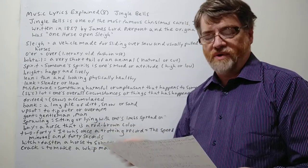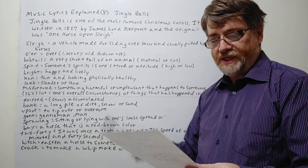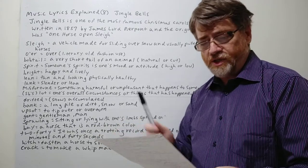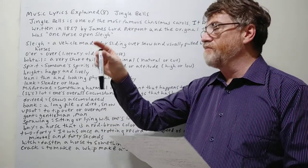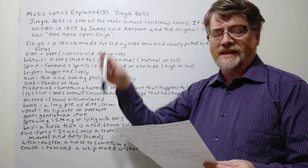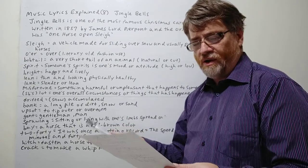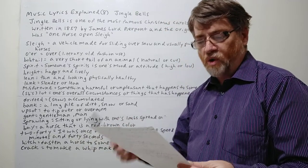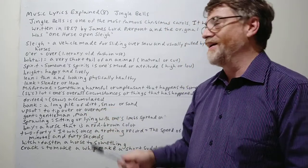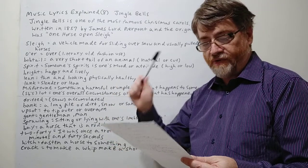And then it goes into the chorus. Of course, everybody always knows the chorus, which is basically: Jingle bells, jingle bells, jingle all the way. Jingle, of course, is the sound of bells ringing together—ding, ding, ding, ding. That's a jingle. Oh, what fun it is to ride in a one-horse open sleigh. Hey! And then they add that 'hey.'